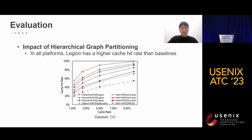This figure shows the impact of hierarchical graph partitioning. The dataset shown is CO, tested on three 8-GPU platforms. NV8 means 1 click has 8 GPUs; NV4 means 2 clicks, each with 4 GPUs; NV2 means 4 clicks, each with 2 GPUs; and No NV means not utilizing NVLinks. To be fair, we strengthen ParGraph and Quiver with the pre-sampling-based hotness metric. We can observe that in all platforms, Legion has a higher cache hit rate than all baselines.